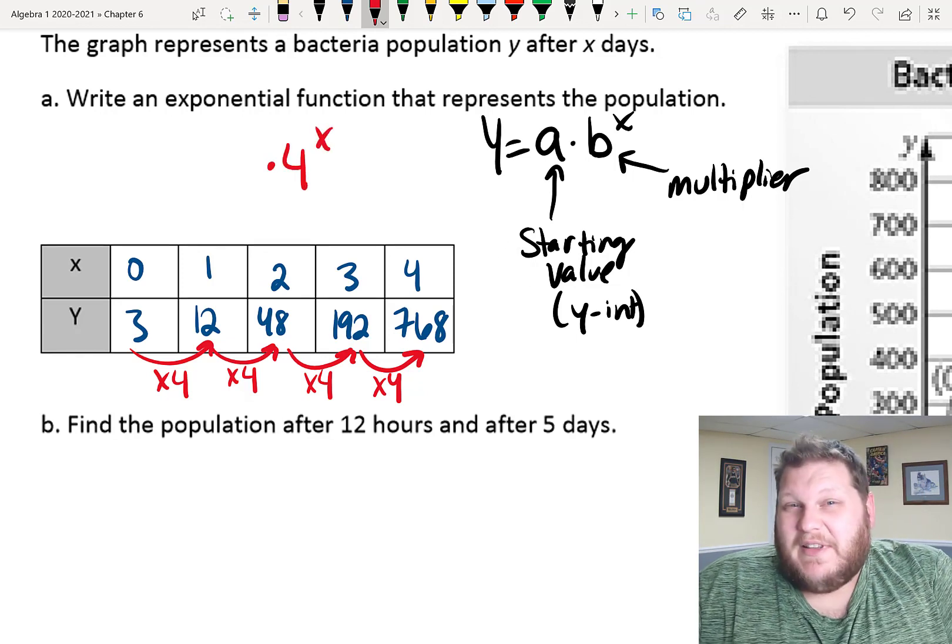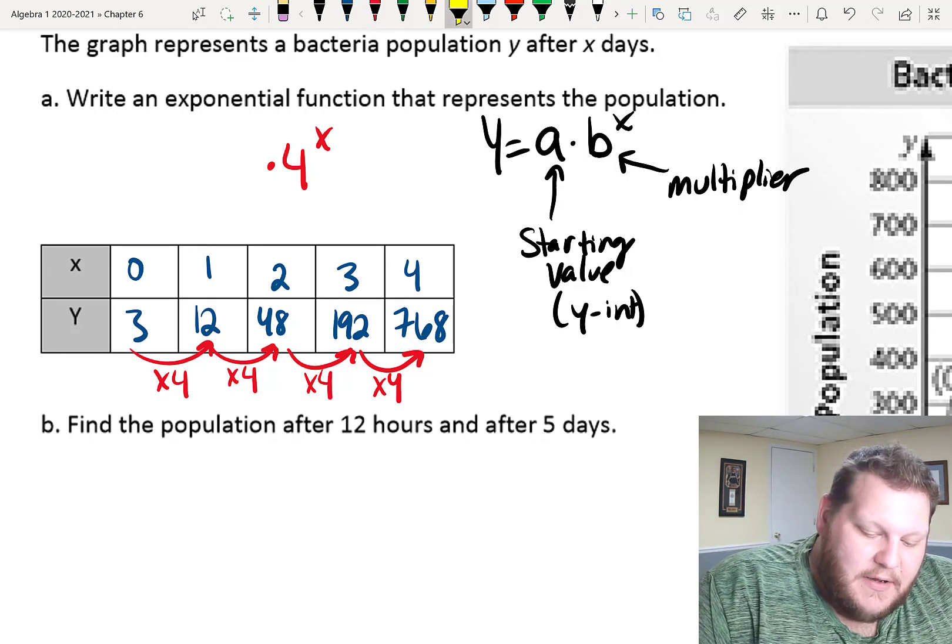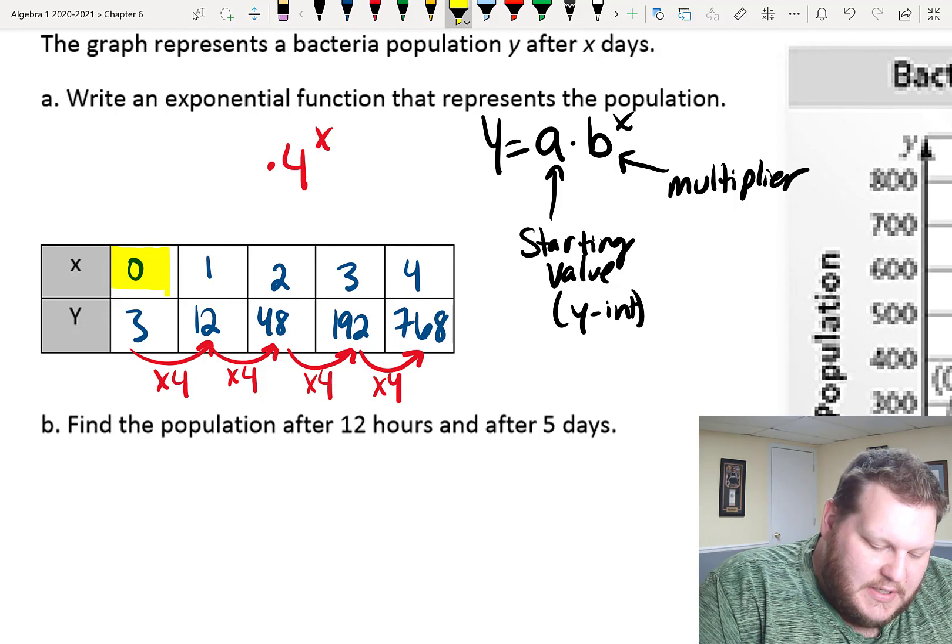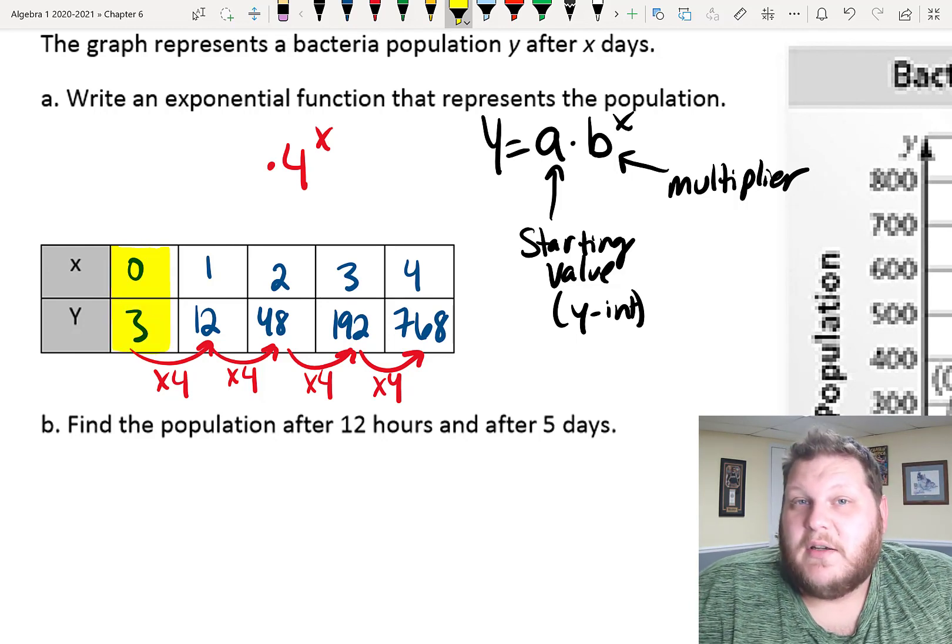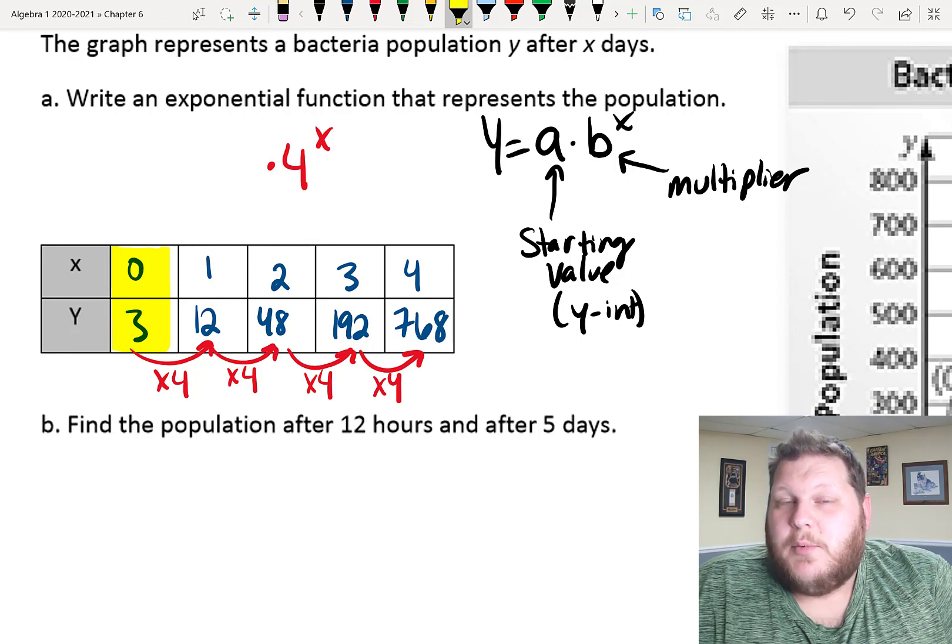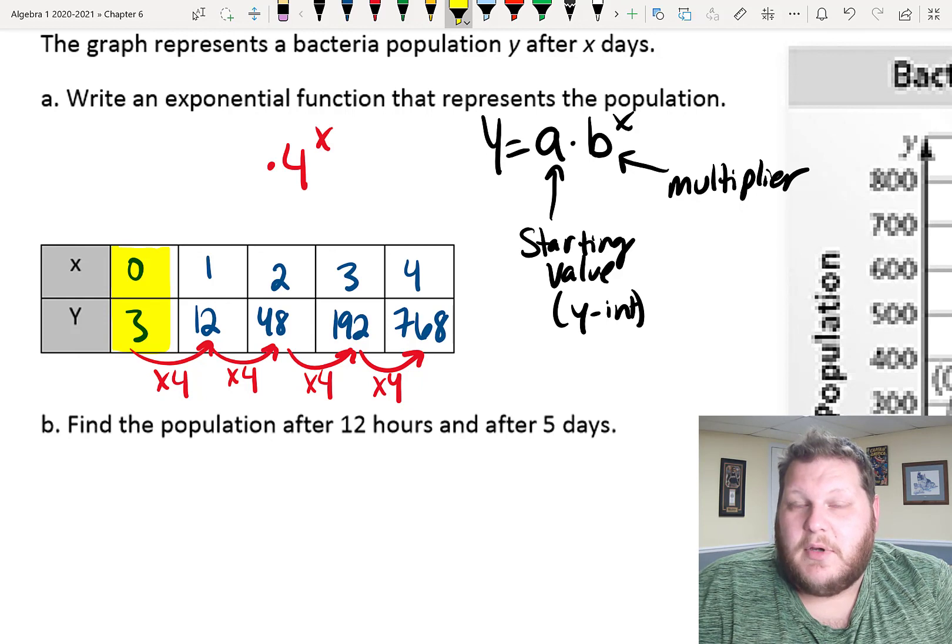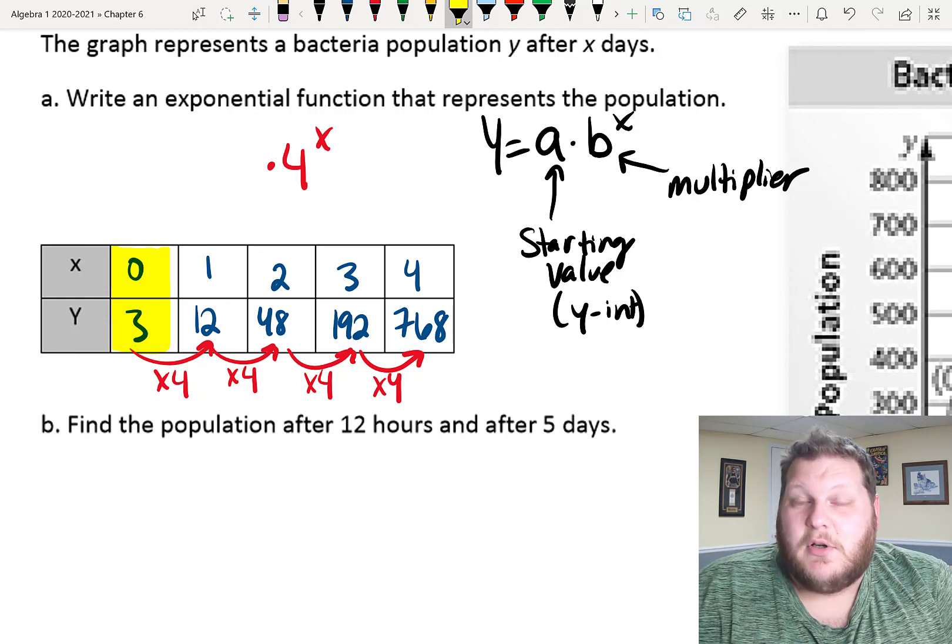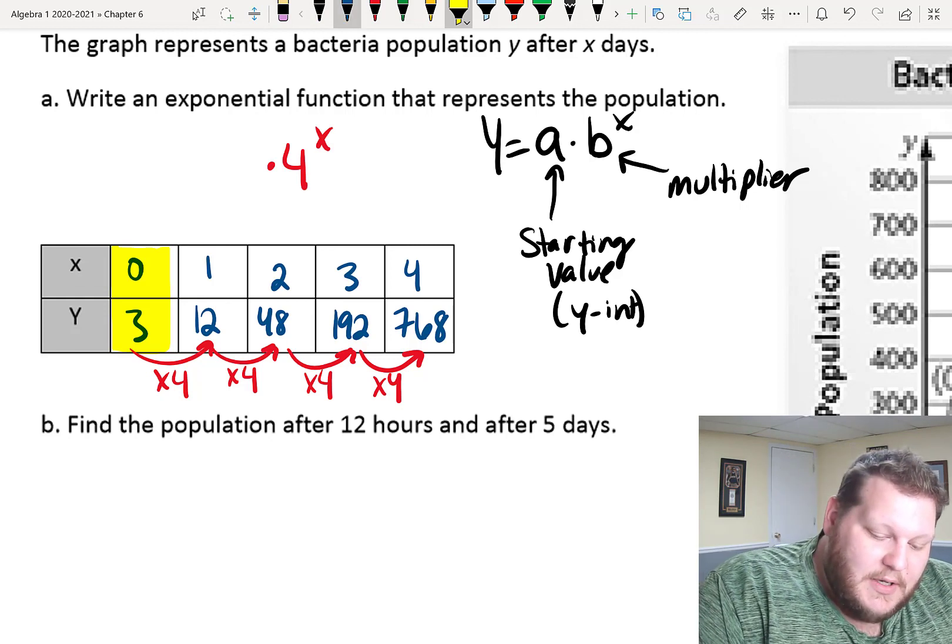We still need to figure out what that a-value is, what that starting value is. Now, in my function, just like in a linear function, if we were looking for my y-intercept, it's always the point where my x-value is 0. So, this point that I just highlighted, 0, 3, that is my y-intercept. That's where it crosses the y-axis. When x-value is 0, my y-value is 3, which tells me that my a is positive 3.